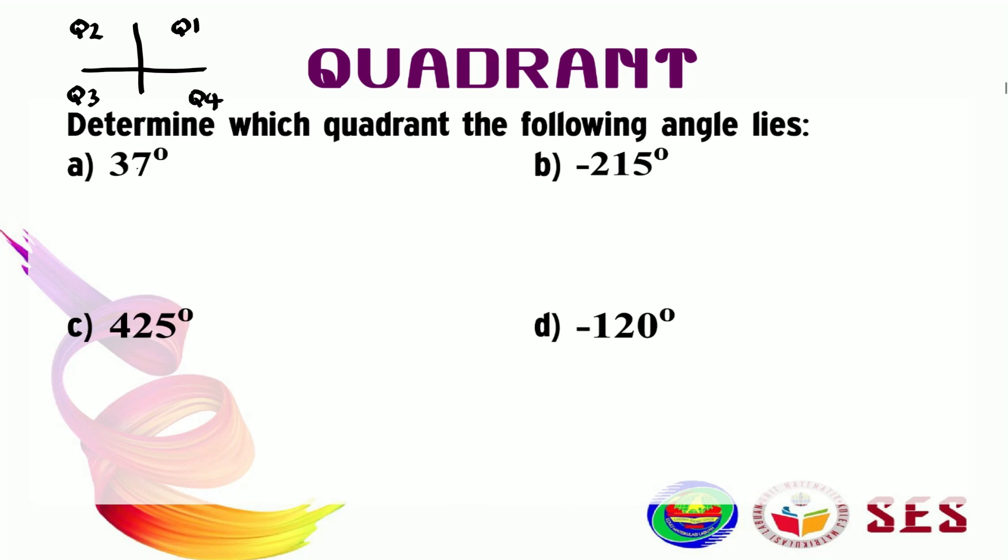In trigonometry, it is important to know which quadrant an angle lies. So, now we are going to briefly dip into that. We know that this is 0 degrees, and this is 90 degrees. We have here 180 degrees, 270 degrees, and a full cycle is 360 degrees.